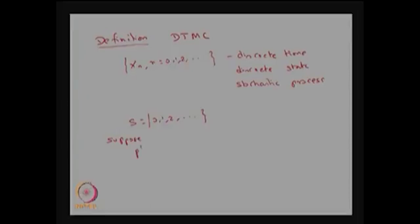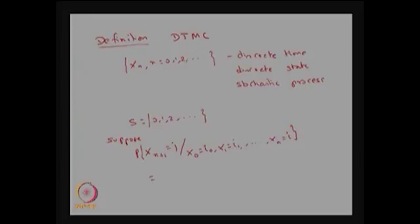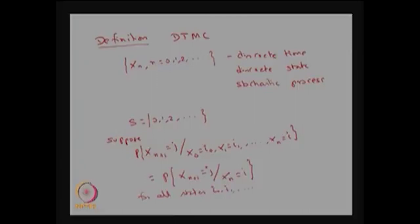Suppose the probability that Xn+1 will be taking the value j, given that X0 is equal to i0, X1 was i1, and so on, and Xn was i — that probability is the same as the probability of Xn+1 being j given that Xn was i, for all states i0, i1, ..., i and j, and also for all n greater than or equal to 0.